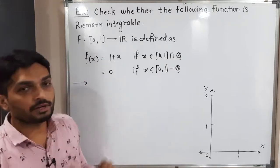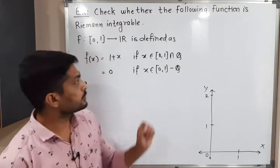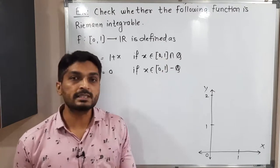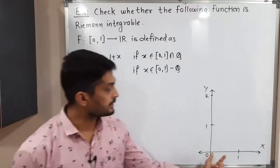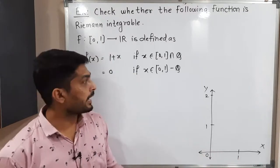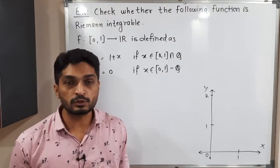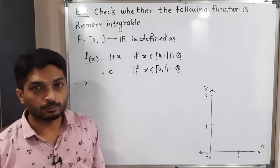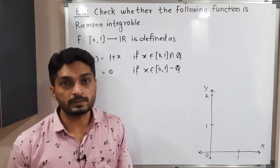So this function is defined in this way. It has two different definitions: 1 plus x and 0. For the closed interval [0,1] intersected with Q — Q means the set of rational numbers — the function has definition 1 plus x. And for the closed interval [0,1] minus Q, that means for irrational numbers, its value is 0.